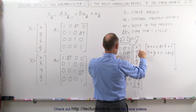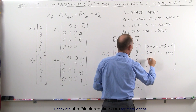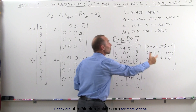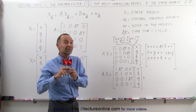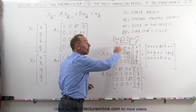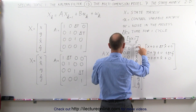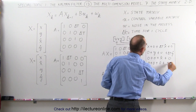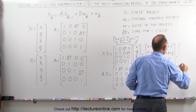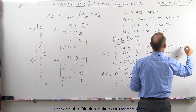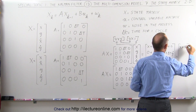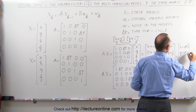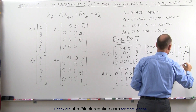The third element gives us 0 plus 0 plus x-dot plus 0, which means the new velocity is exactly the same as the previous velocity, because velocity can only change if there's acceleration, and that's not part of this matrix multiplication. The final element gives us 0 plus 0 plus 0 plus y-dot. So the simplified result is the matrix: x plus delta T times x-dot, y plus delta T times y-dot, x-dot, and y-dot.